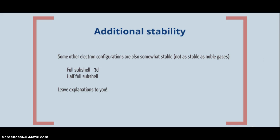There is some other electron configurations that have stability also, not as stable as the noble gases. And that's when the subshell is full, such as the 3D subshell, and sometimes there's stability when there's a half full subshell. But this time I'm going to leave those explanations to you.